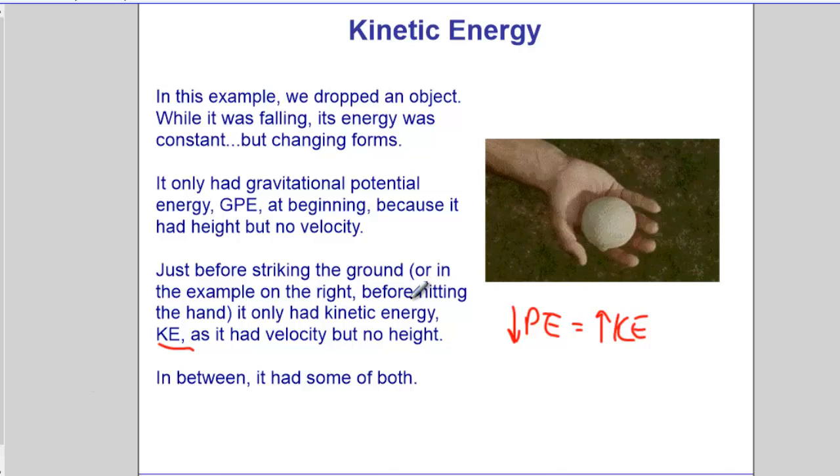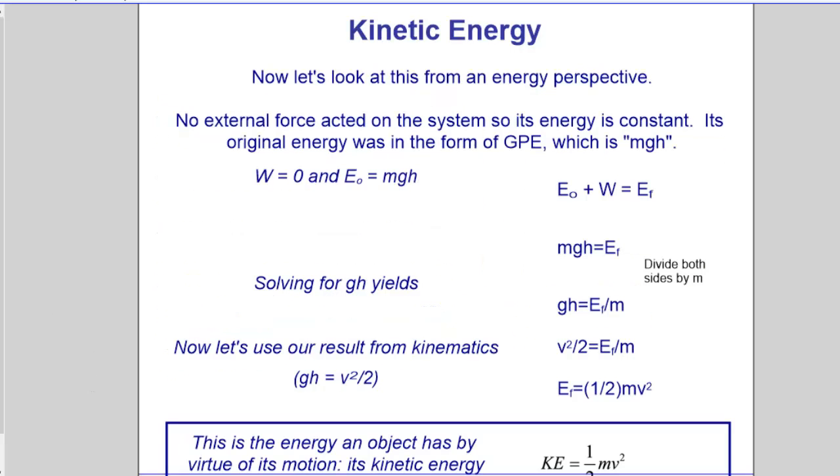How can we account for the change in kinetic energy mathematically? Let's look at this from an energy perspective. When no external force acts on a system, the energy is constant. So really the work done is zero in this case. And what's happening, you're losing one form and gaining another.